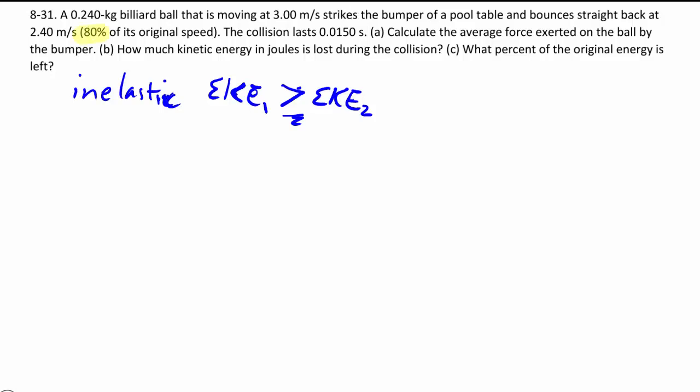In this case, they give us very specifically that the final speed is a certain amount. And in fact, because we're only considering the ball, there's also an external force on the ball, so even the momentum is not going to be constant because there's an external impulse.